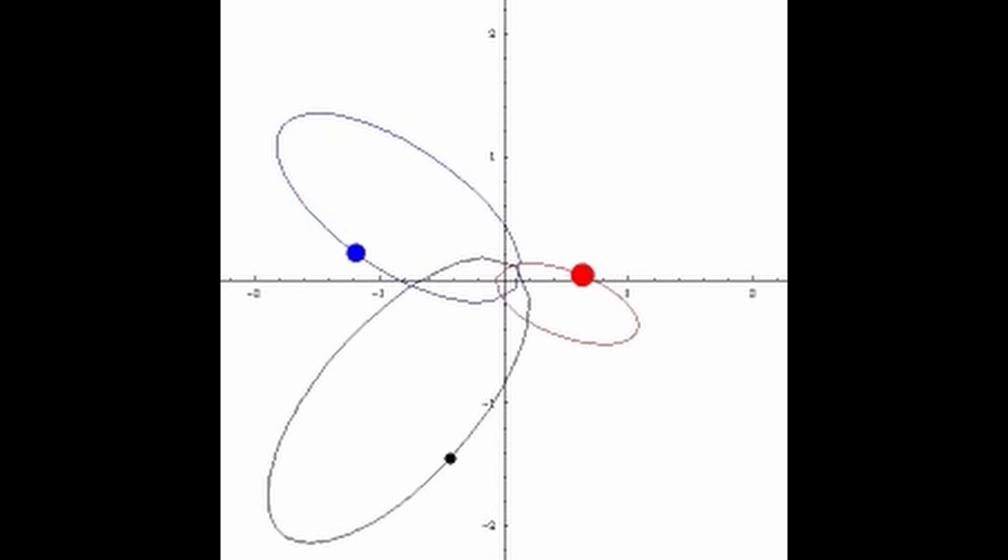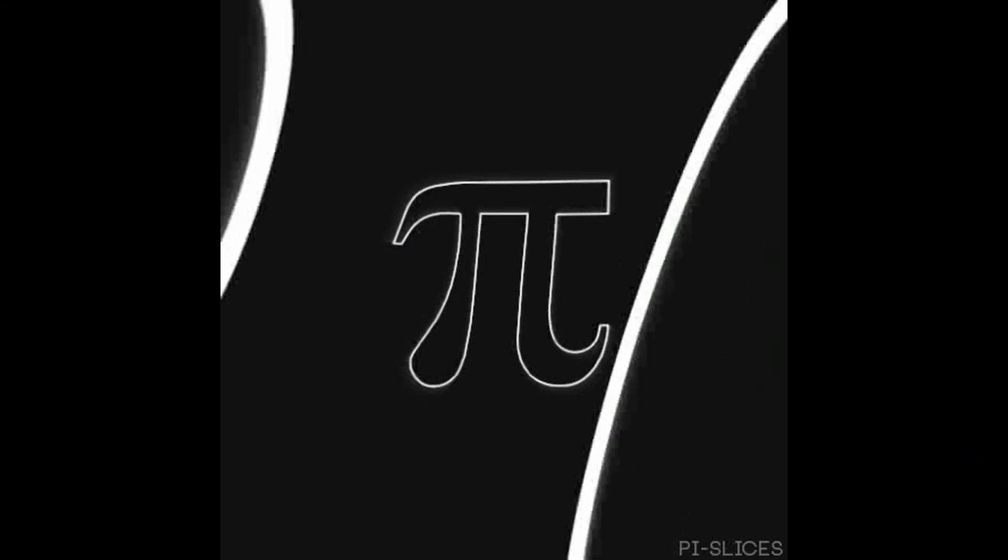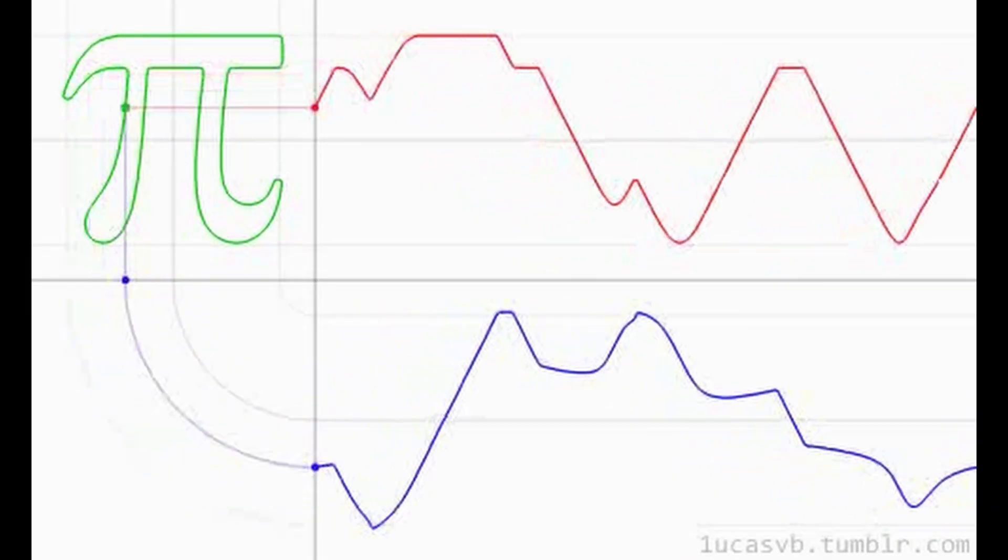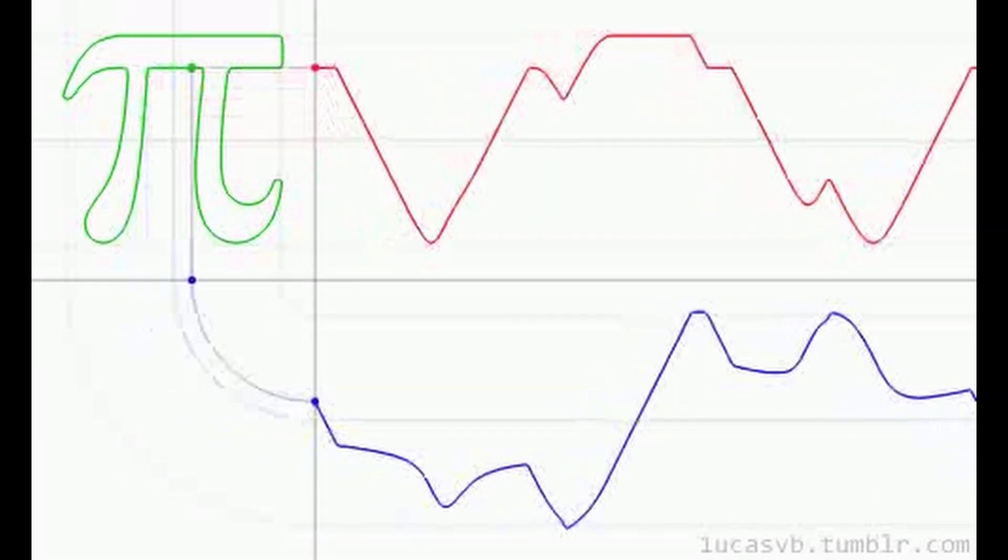Solvable and nilpotent Lie algebras. Solvable Lie algebra: a Lie algebra is solvable if its derived series terminates in the zero subalgebra after a finite number of steps. Nilpotent Lie algebra: a Lie algebra is nilpotent if its lower central series terminates in the zero subalgebra after a finite number of steps.